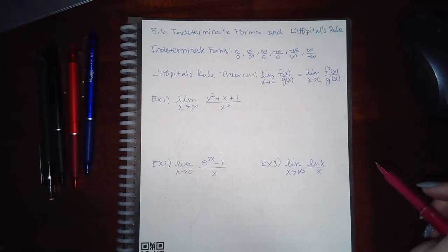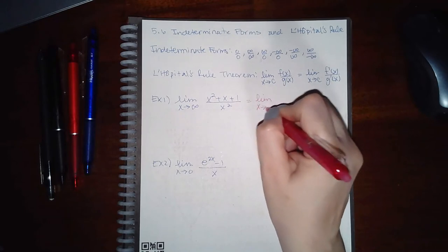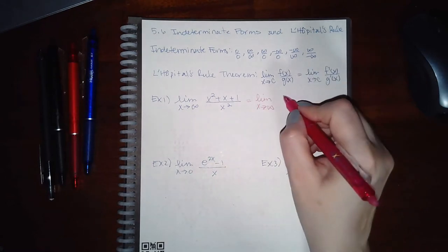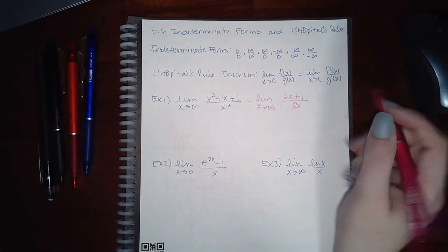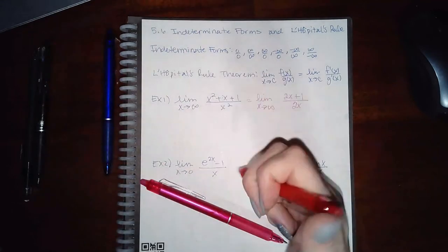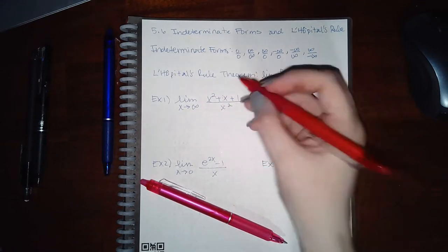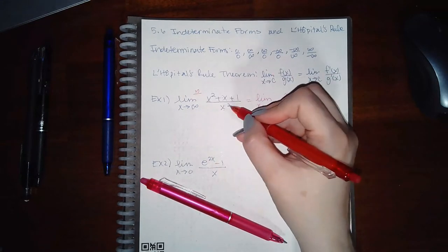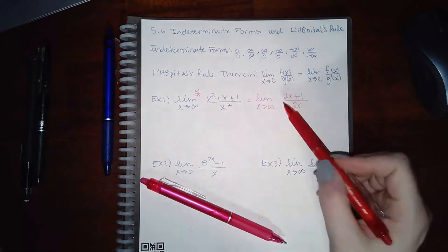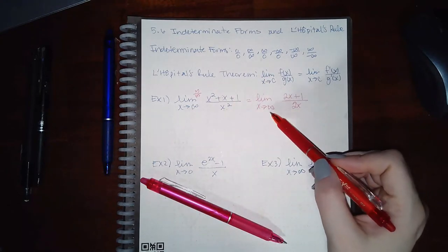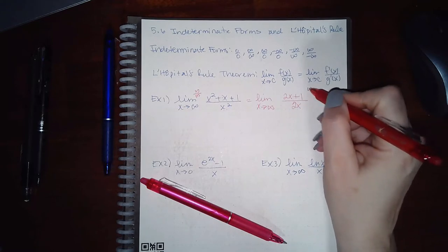For Example 1, we apply L'Hopital's Rule. The limit is as x goes to infinity. If we did direct substitution first, the numerator would give infinity squared plus more infinity plus 1, which is infinity, and the denominator gives infinity squared — also infinity. So we have the indeterminate form infinity over infinity. Applying L'Hopital's Rule, the derivative of the numerator is 2x + 1 and the derivative of the denominator is 2x. Plugging in infinity still gives infinity over infinity.